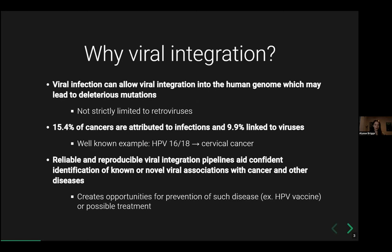Why viral integration? Viral infection can allow the viral genetic material to be integrated into the host genome — here we say human genome, but it can be any host genome. That can lead to deleterious mutations, especially if insertions occur in protein coding regions. This is common with retroviruses, which undergo retrotransposition into the host genome. However, it's not strictly limited — there are studies showing other classes of virus can also lead to viral integration. 15.4% of cancers are already attributed to some type of infection, with 9.9% linked specifically to viruses. A well-known example is HPV 16 and 18 leading to cervical cancer.